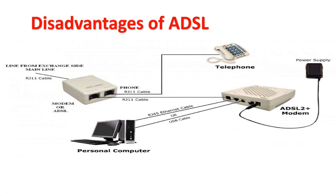Disadvantages of ADSL: ADSL is not available everywhere. It works better when closer to the ISP central office. It presents variable speeds depending upon the time of day, offers faster download than upload, and line testing takes a long time. It is affected by the number of people using your line in a certain area — user numbers can make your bandwidth fluctuate. ADSL connection does not offer any guarantee of the level of service.